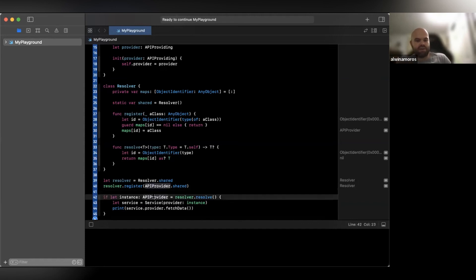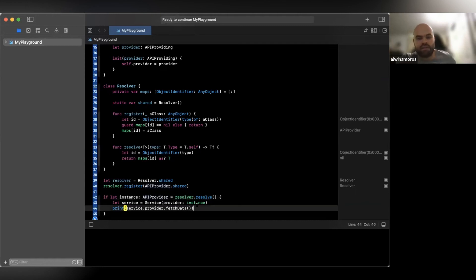Now to get that instance back, we're going to be telling what type that we need back. And we're going to be saying Resolver.Resolve. And it's going to try to find that, the instance that we have stored in the maps.